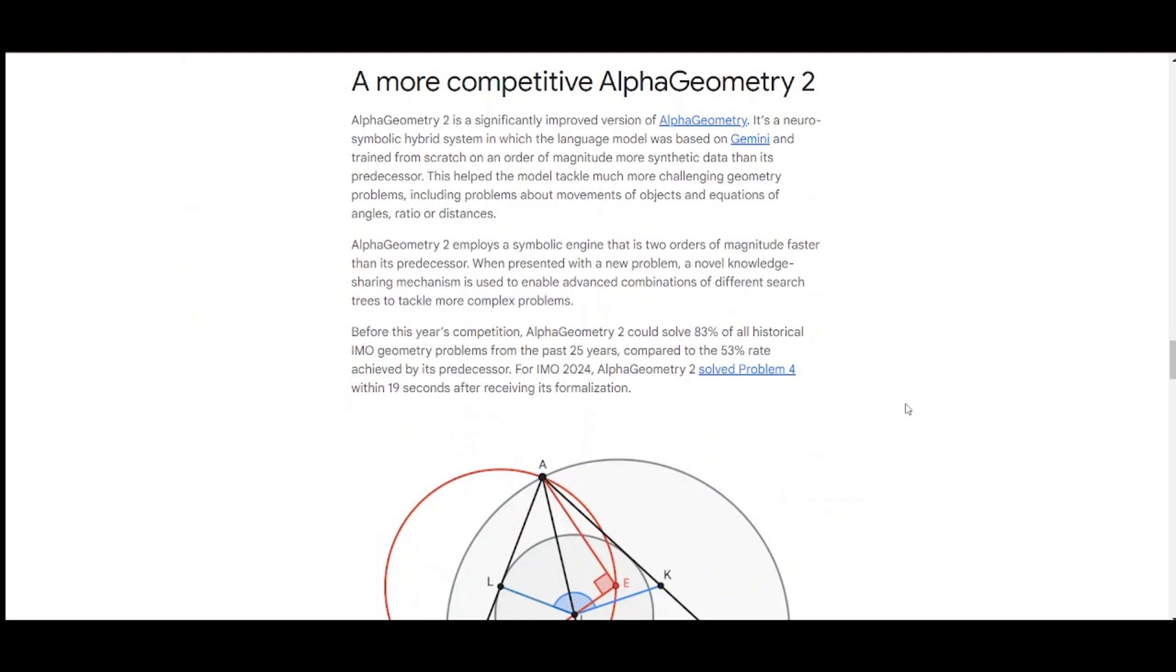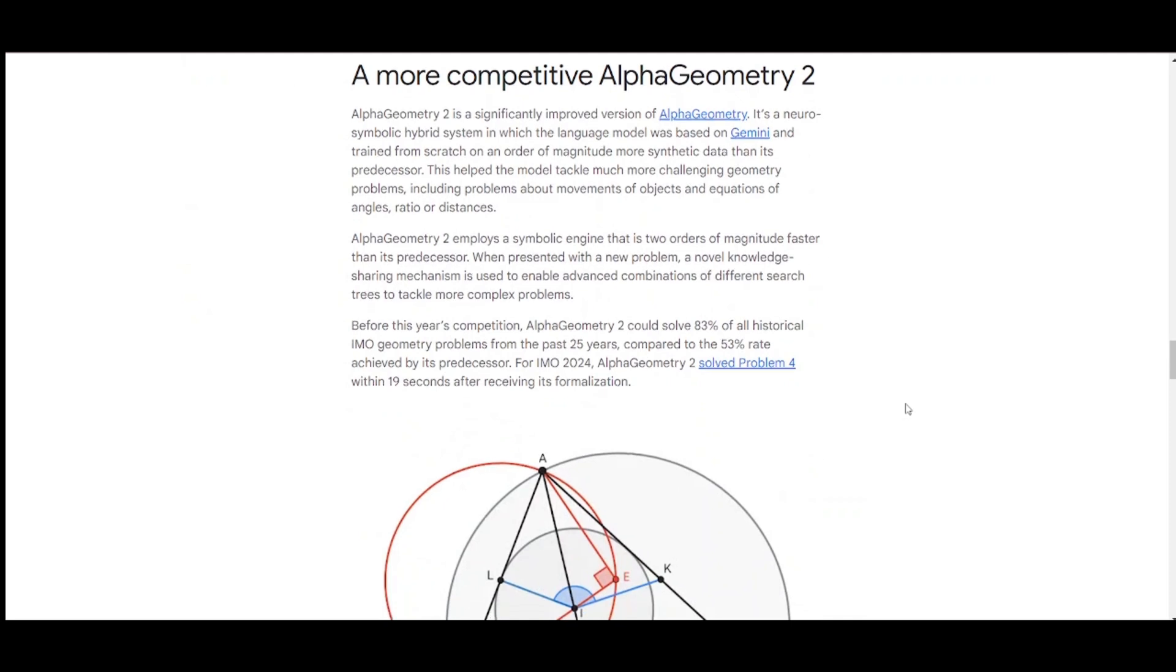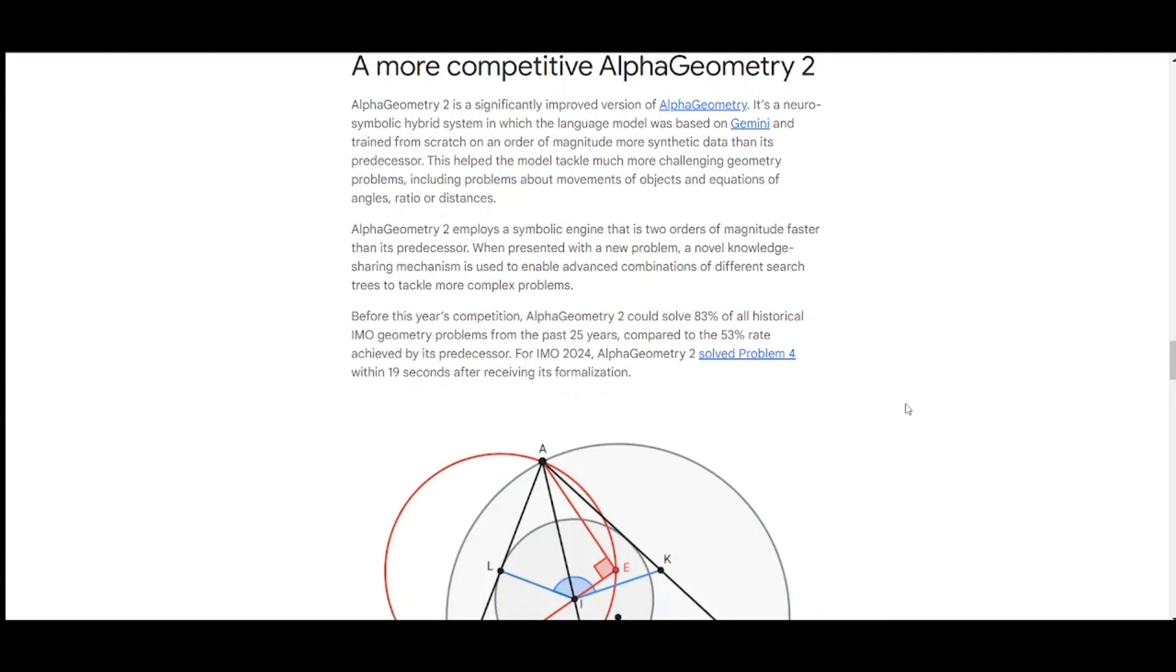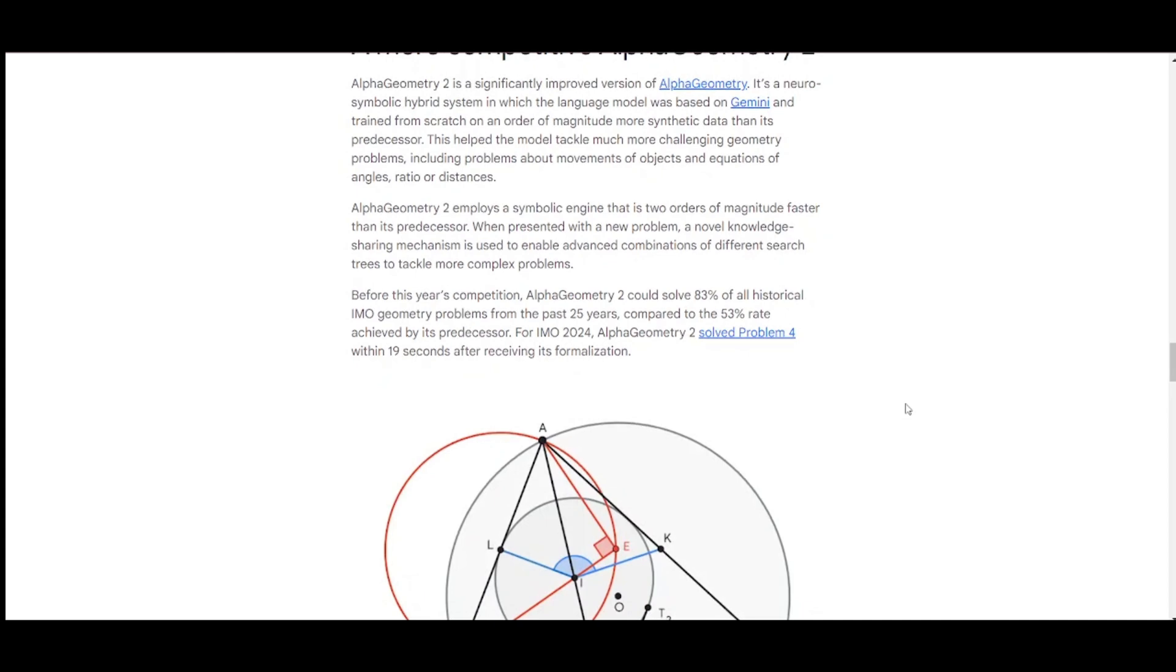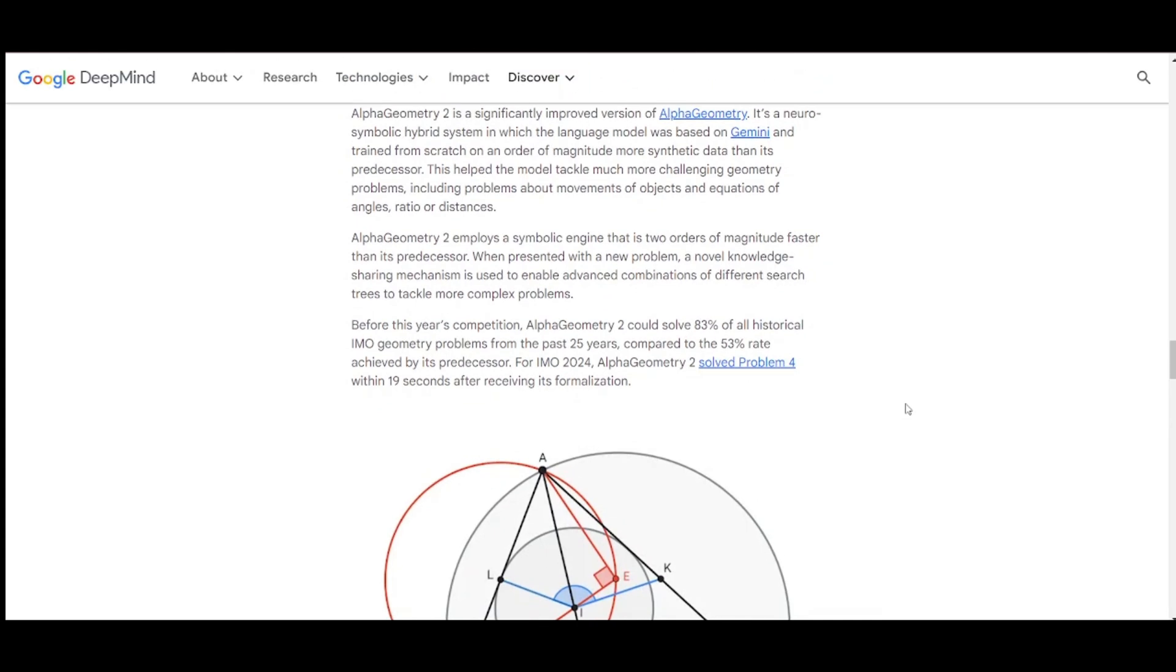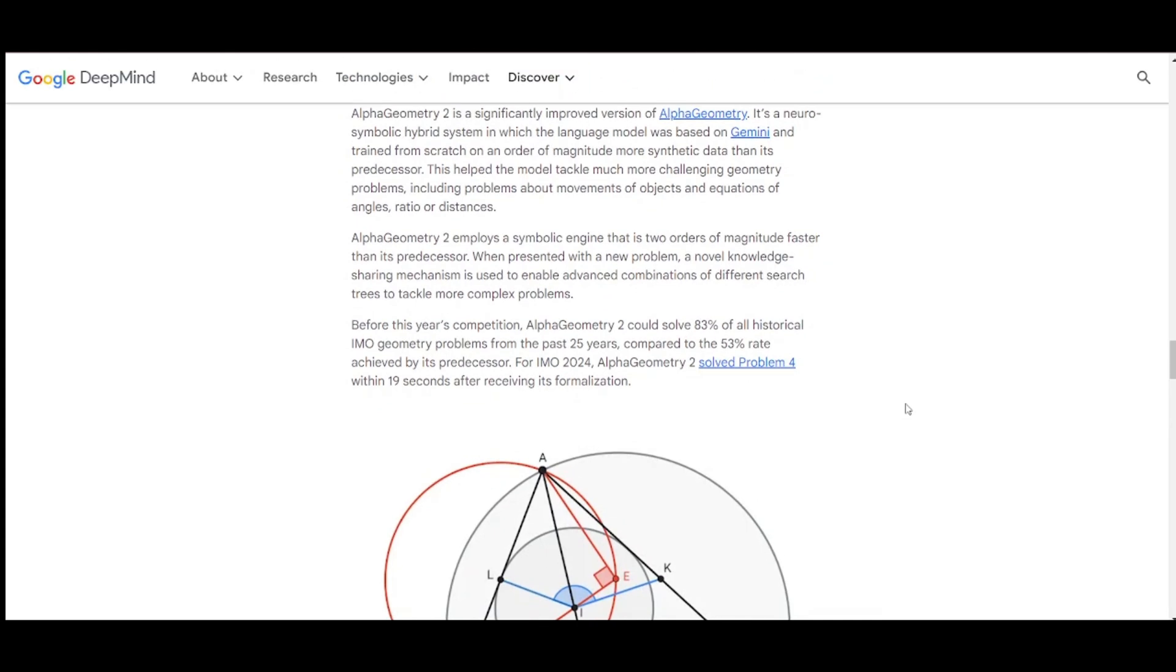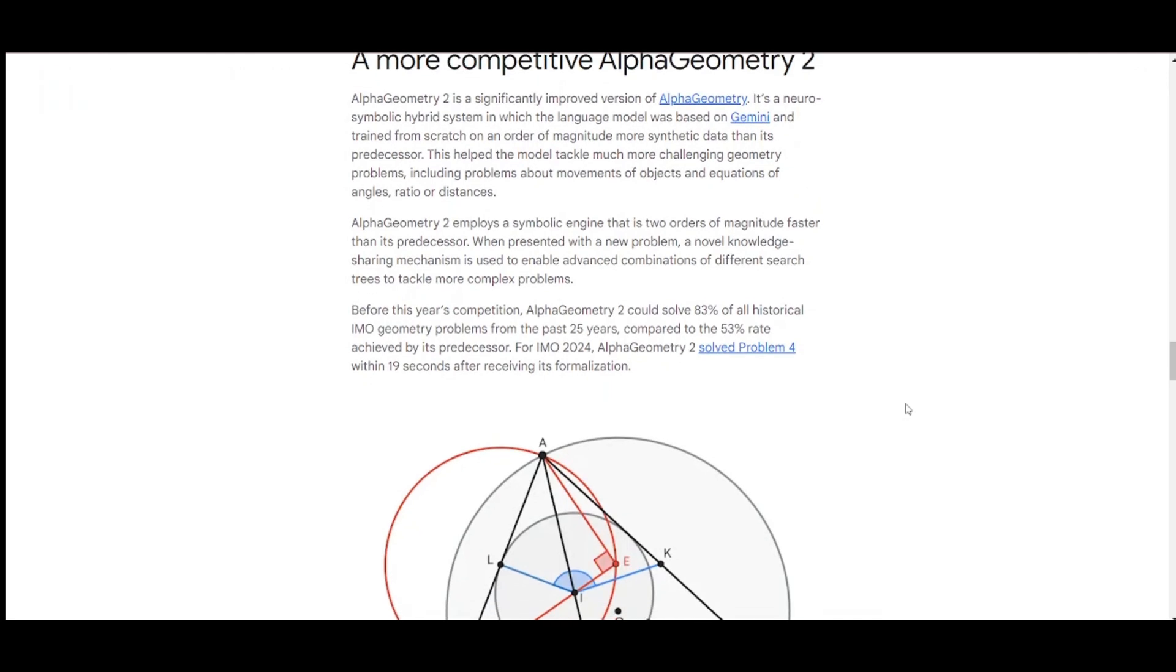AlphaGeometry 2 is a significantly improved version of AlphaGeometry. It's a neurosymbolic hybrid system in which the language model was based on Gemini and trained from scratch on an order of magnitude more synthetic data than its predecessor. This helped the model tackle much more challenging geometry problems, including problems about the movements of objects and equations of angles, ratios, or distances. AlphaGeometry 2 employs a symbolic engine that is two orders of magnitude faster than its predecessor.